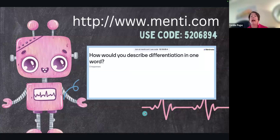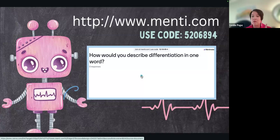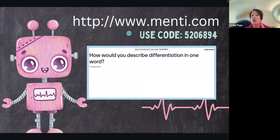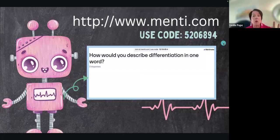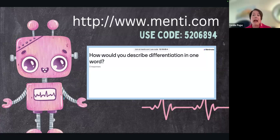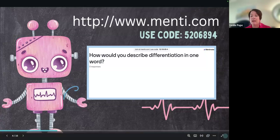If you have this presentation already pulled up, you can click on the picture. How would you describe differentiation in one word? Or you can type in menti.com and use the code 520-6894, and that should let you into Mentimeter. I'm going to show you what Mentimeter looks like on the teacher side.